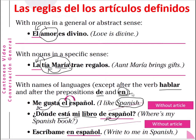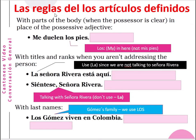We continue with las reglas de los artículos definidos — more rules on the definite articles. With parts of the body, when the possessor is clear, in place of the possessive adjectives. For example: me duelen los pies — 'pies' means the legs or the feet. 'Los pies' means the legs or feet. 'Duelen' means hurt. So 'me duelen los pies' means my feet hurt.